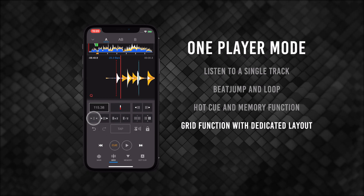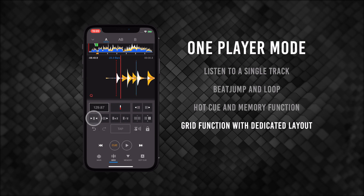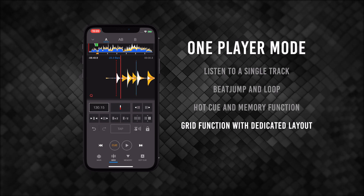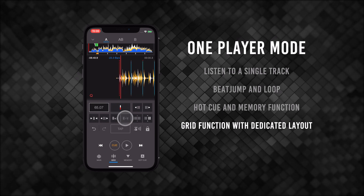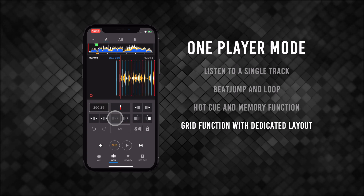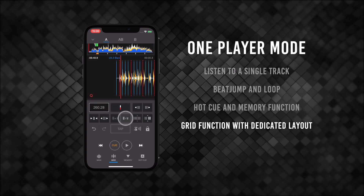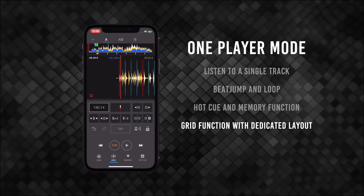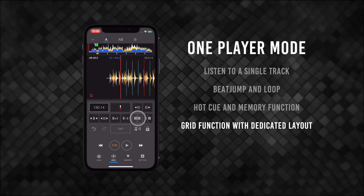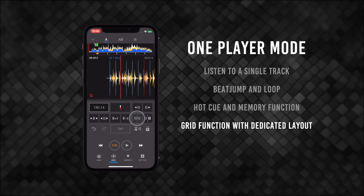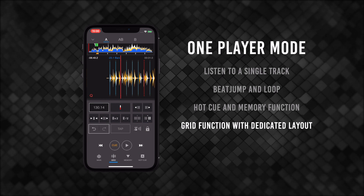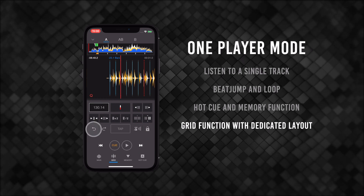Once again, holding the button down will increase how quickly the grid expands. Pressing either button here will either halve or double the BPM. And these two buttons will change whether your adjustment affects the entire track or just the track to the right of your playhead. Below that, you have the undo and redo buttons.